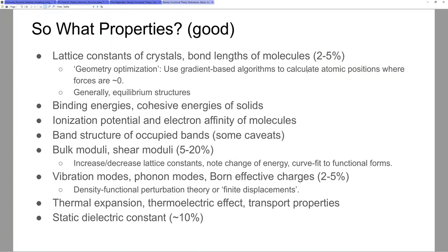We can get band structure — we can get the occupied bands, and as long as you are in a single particle band structure picture, you can get very good band structure. Those who have done DFT will quickly tell me: but the Kohn-Sham eigenstates don't have a physical meaning — they're a fictitious auxiliary system. And my response to that is: you are completely correct, mathematically and formally. They do not have a very obvious physical connection. But they're actually first-order approximations to the true wave functions of certain systems, and more importantly, experimentally, the wave functions seem to match up exceptionally well.